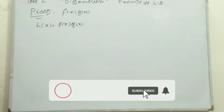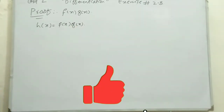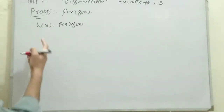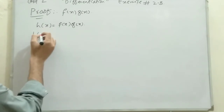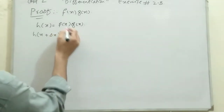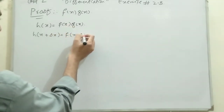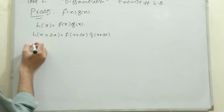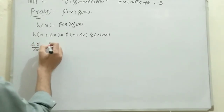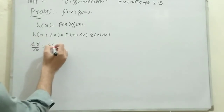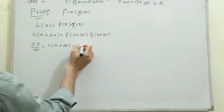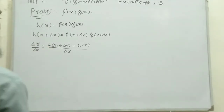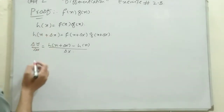We will find the differentiation of the product of these two functions using the first principle rule. We have h(x) = f(x) · g(x). According to the first principle rule, replace x with x + Δx, so it becomes h(x + Δx) = f(x + Δx) · g(x + Δx). Now using the formula, h'(x) = [h(x + Δx) - h(x)] / Δx.